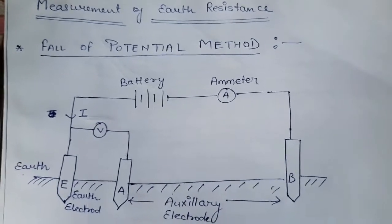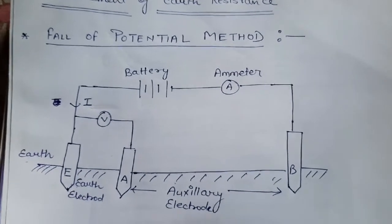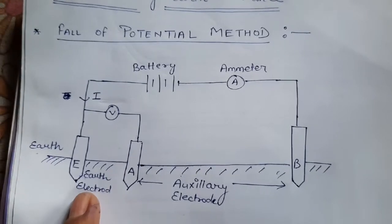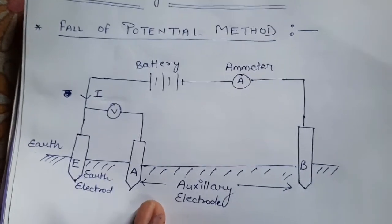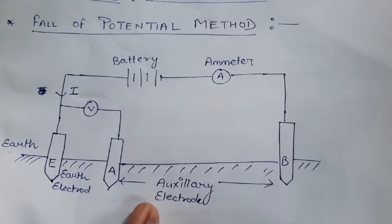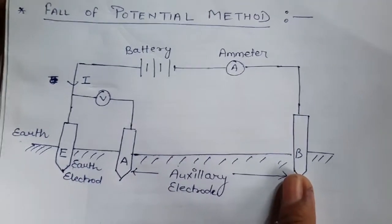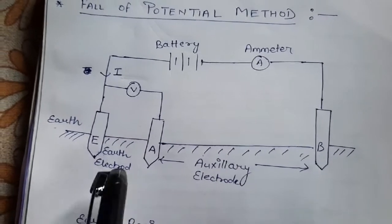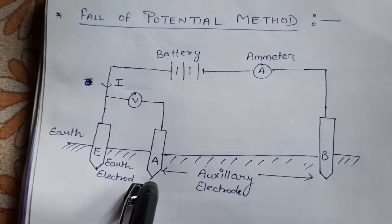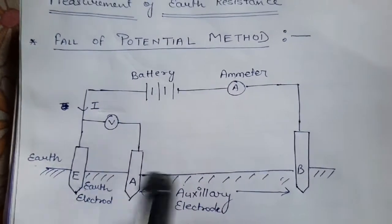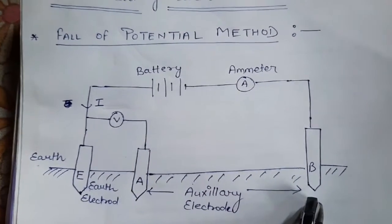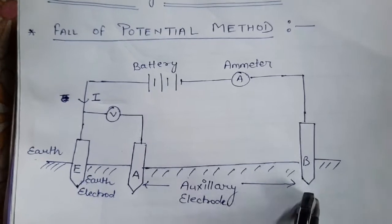In the fall of potential method there are three electrodes: one earth electrode, a second auxiliary electrode A, and a third auxiliary electrode B. Auxiliary electrode A's position changes, but the earth electrode and auxiliary electrode B are fixed in position.